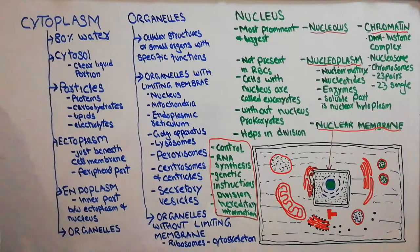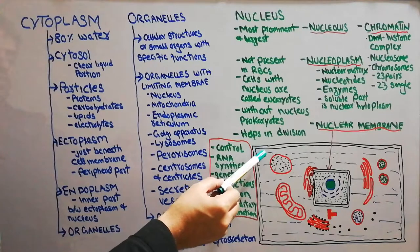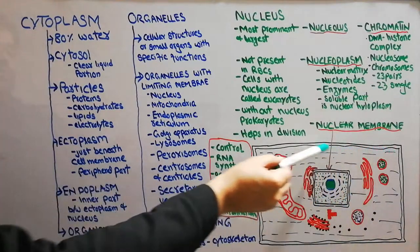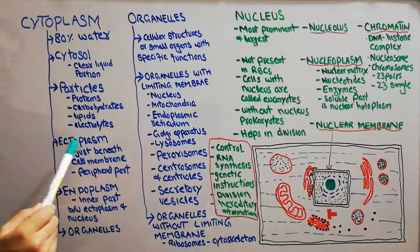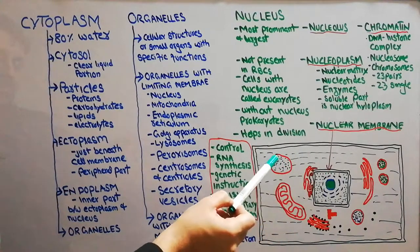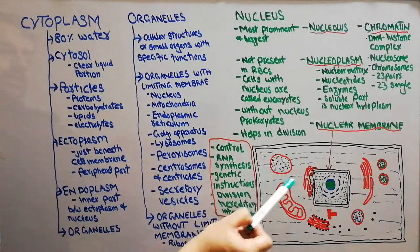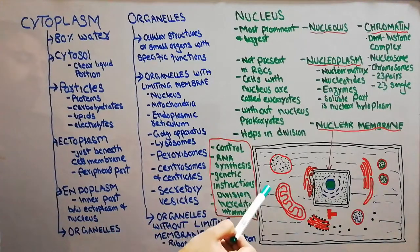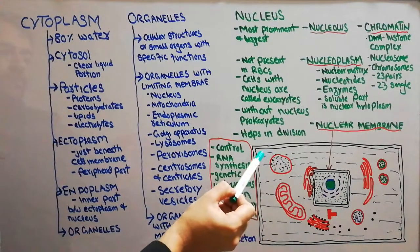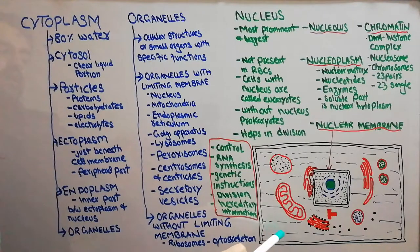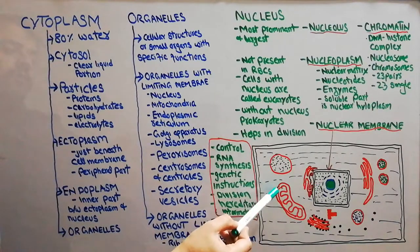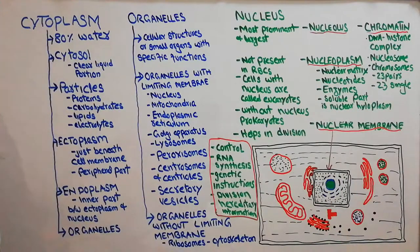The cytoplasm has two different portions. For ease, we divide them into ectoplasm — the portion of the cytoplasm just below the cell membrane, also known as the peripheral portion — and endoplasm. The endoplasm is the portion of the cytoplasm present between the nuclear membrane and the ectoplasm. So the outer portion just below the cell membrane is ectoplasm, and the inner portion is endoplasm.